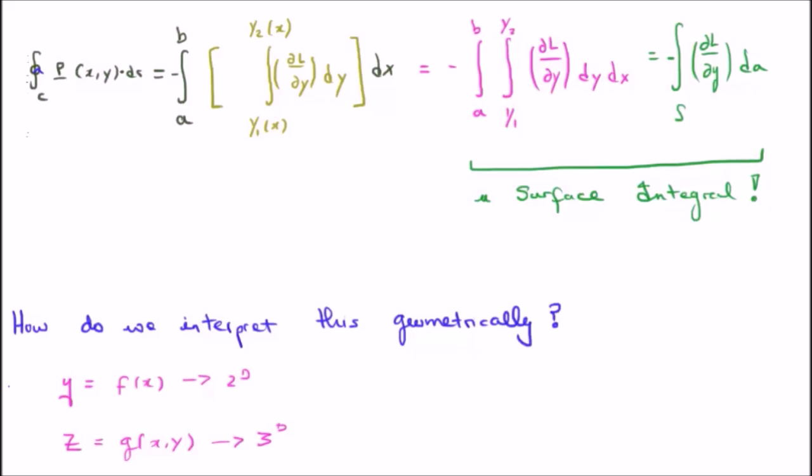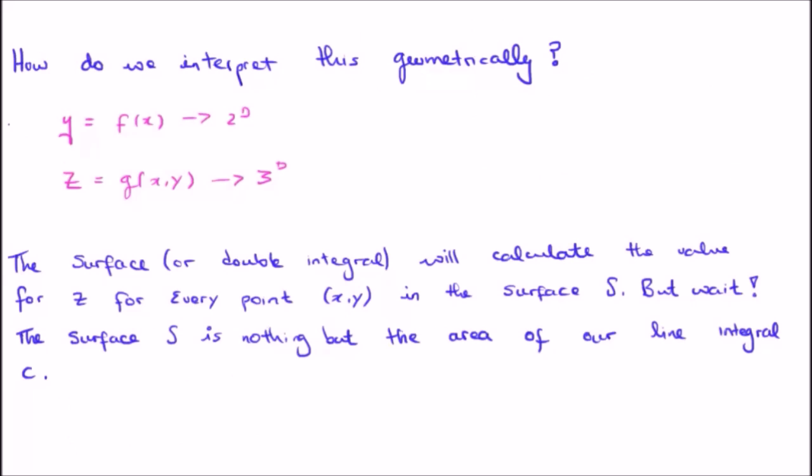How can we interpret this geometrically? If we have y as a function of x, that's a two-dimensional function. But z is a function of x and y, so this is a three-dimensional function. This means the surface or double integral will calculate the value for z at every point (x,y) in the surface S. But the surface S is nothing more than the area of the line integral which we started with.